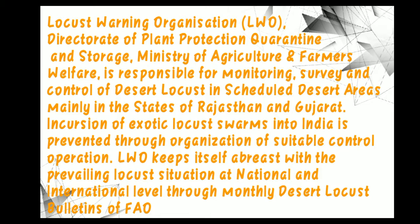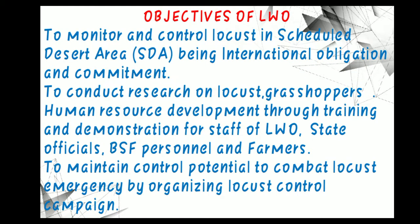Incursion of exotic locust swarms into India is prevented through suitable control operations. The LWO keeps abreast of the prevailing locust situation at national and international levels through monthly desert locust bulletins of the FAO. The main objectives of LWO are: first, to monitor and control locusts in the Scheduled Desert Area as an international obligation; second, to conduct research on locusts and grasshoppers; and third, human resource development through training and demonstrations for LWO staff, state officials, BSF personnel, and farmers, maintaining control potential to combat locust emergencies.